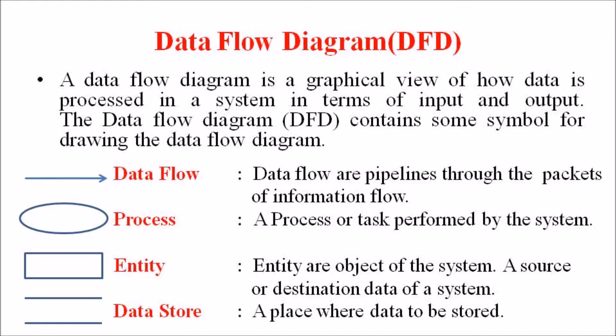The four fundamental basic symbols available are: data flow, process, entity, and data store. Data flows are pipelines through which packets of information flow, and these data flows are represented by a line with an arrowhead. The second one is a process or task — these are tasks performed by the system and the processes are represented by a circle or ellipse.